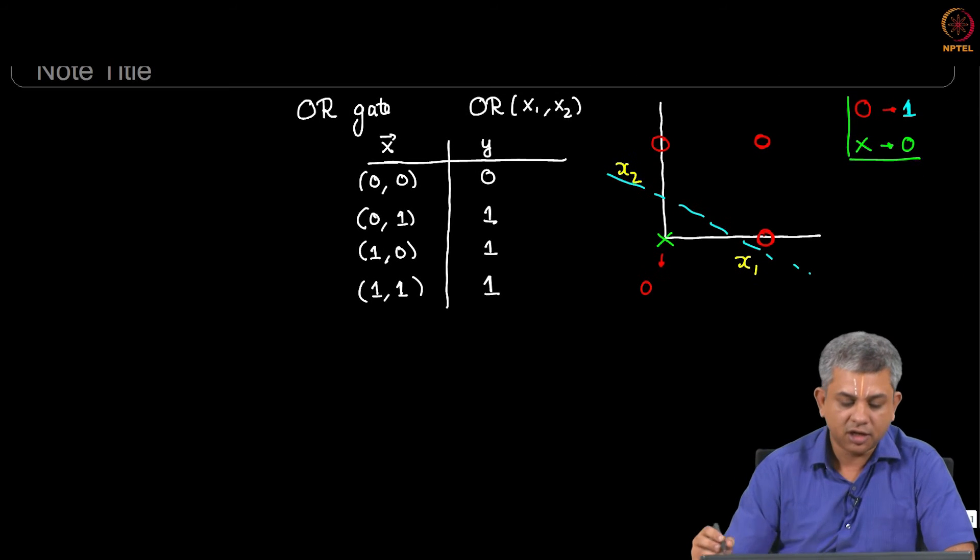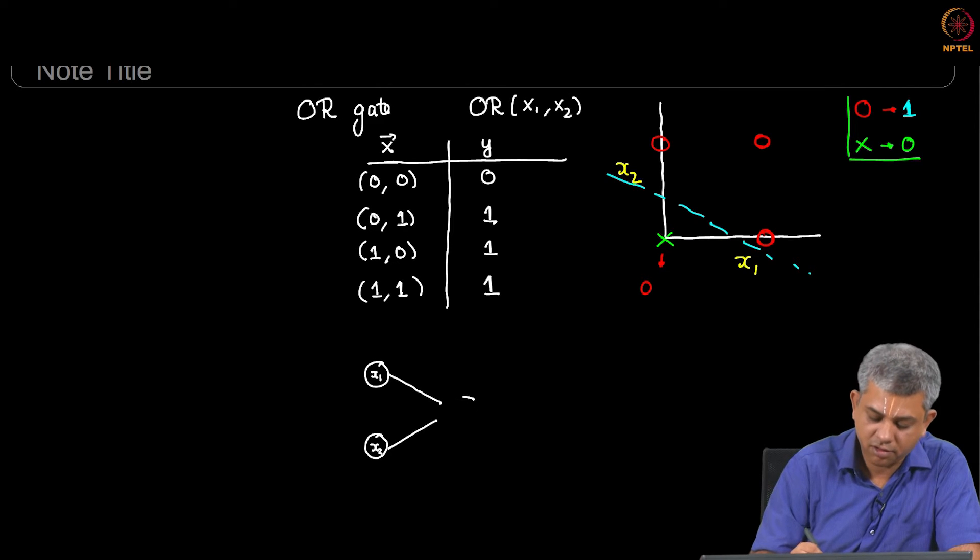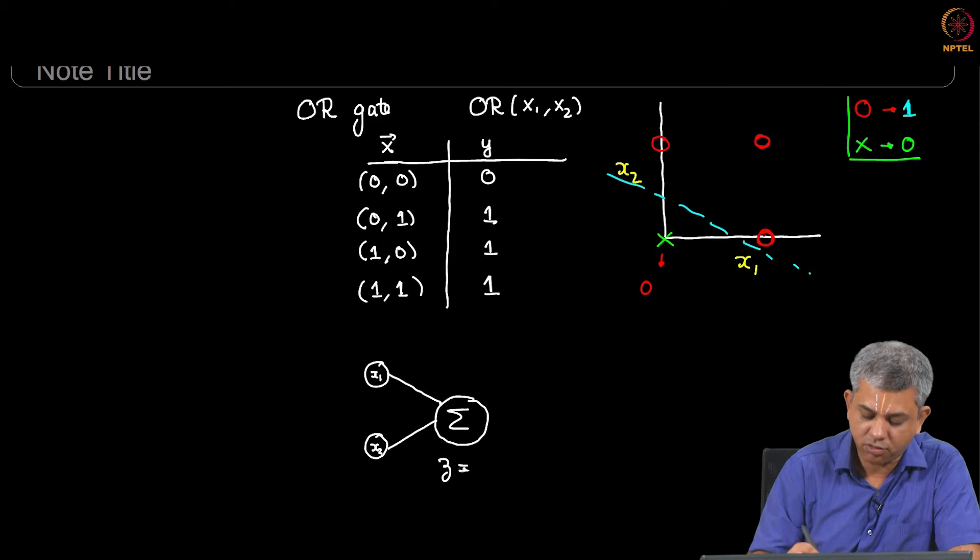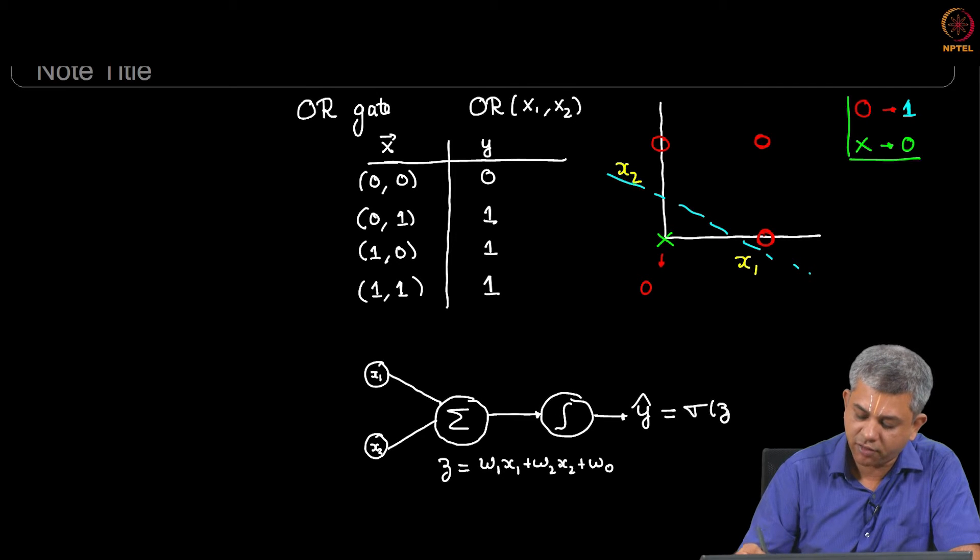But we will try and do this mathematically. So remember we can represent our logistic regression as a simple neural diagram as follows: you have X1, you have X2, these two combine here. Your summation Z is equal to W1 X1 plus W2 X2 plus a bias unit W0 followed by a sigmoid, and our prediction Y hat is sigmoid of Z.